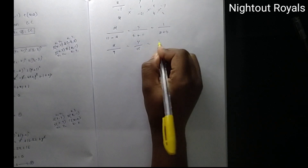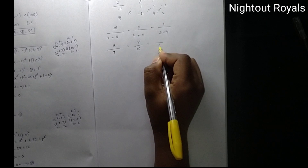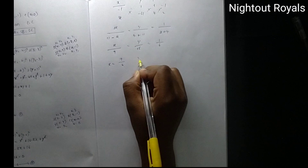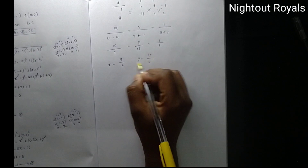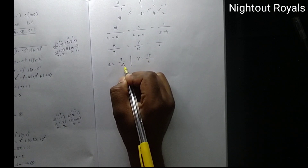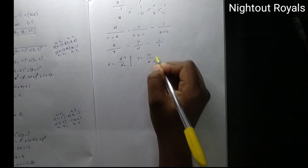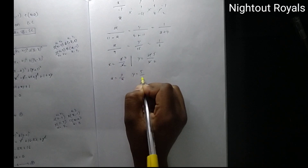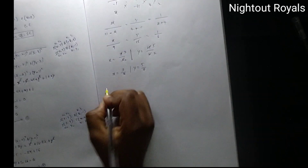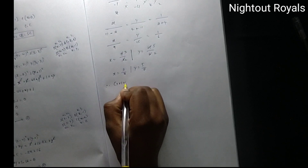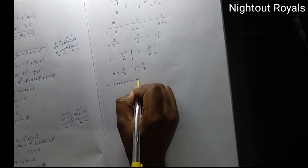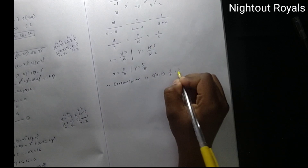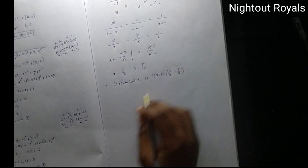Simplifying: X = 9/6 = 3/2 and Y = 15/6 = 5/2. Therefore, the circumcenter S(X, Y) = (3/2, 5/2). This is the solution to Problem 1.